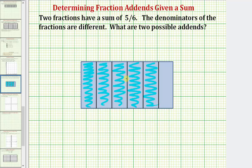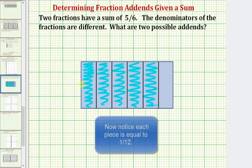Now because we're looking for two fractions with different denominators that have a sum of five-sixths, we'll need to partition the rectangle into additional pieces of the same size, let's say here.